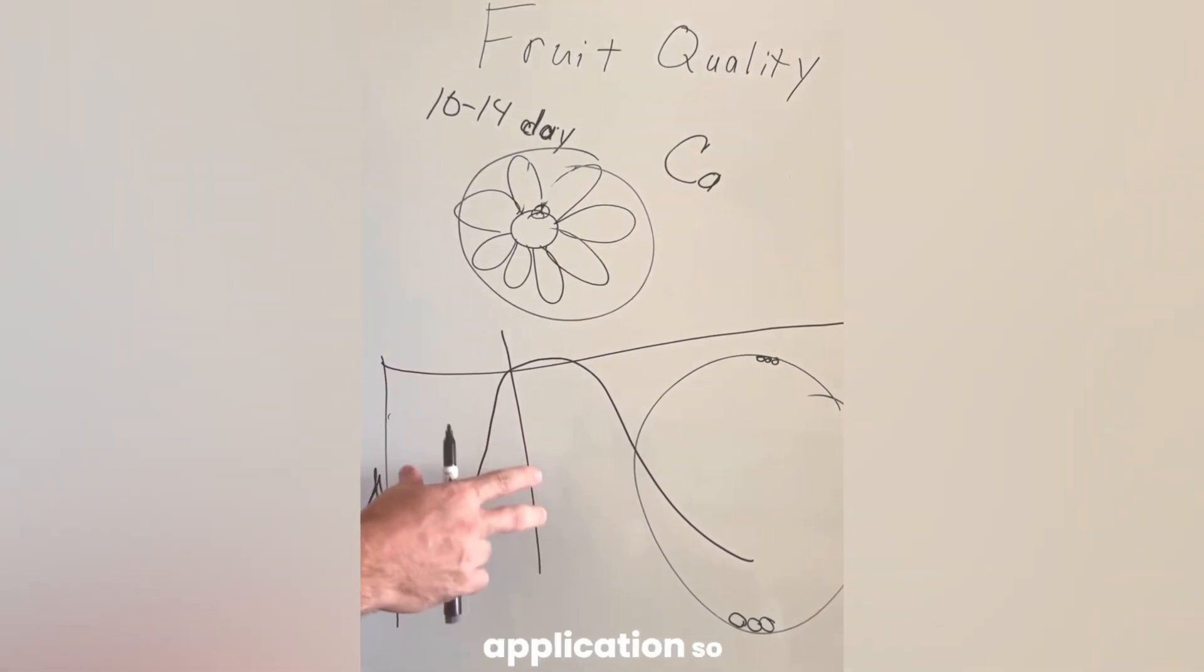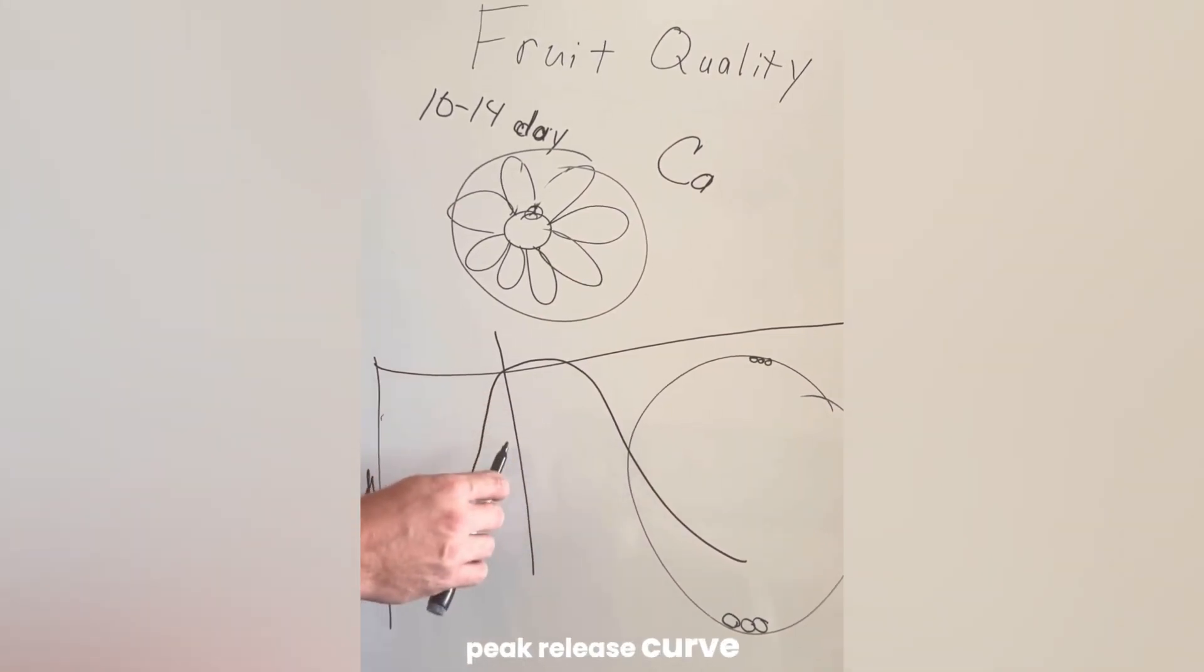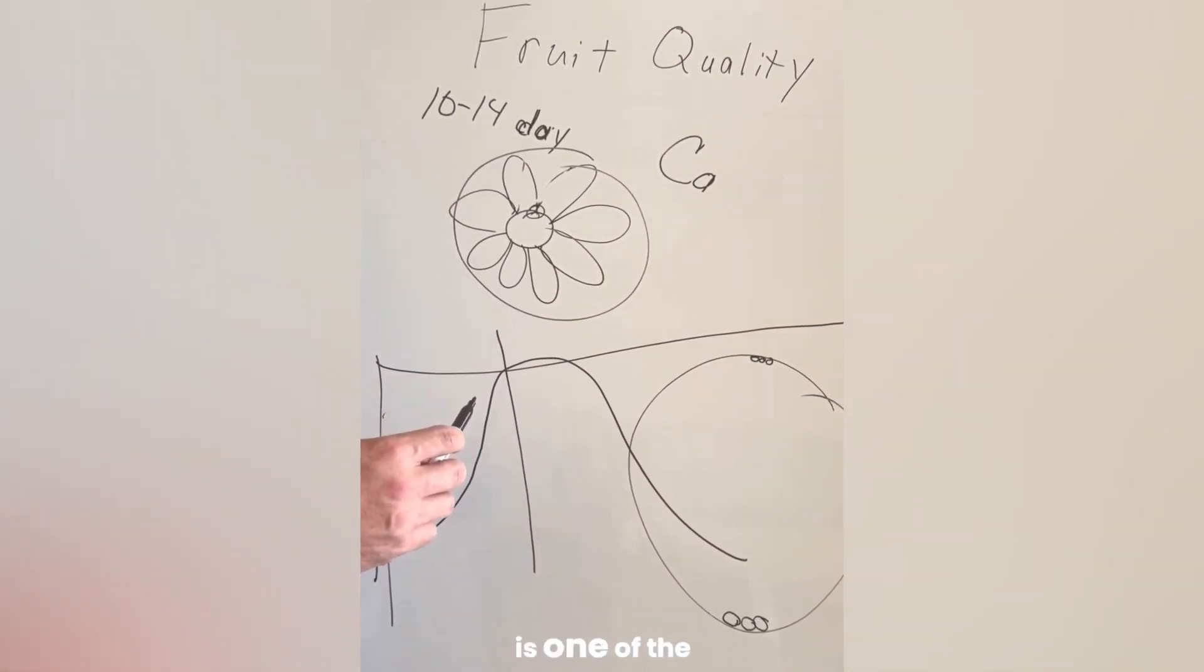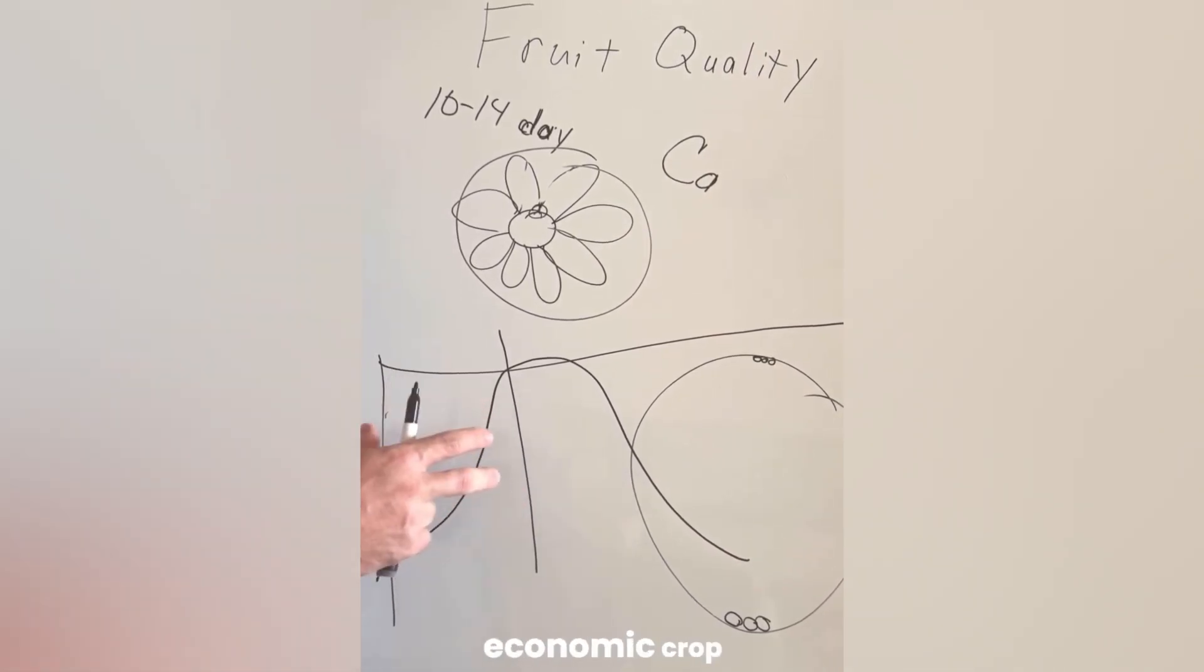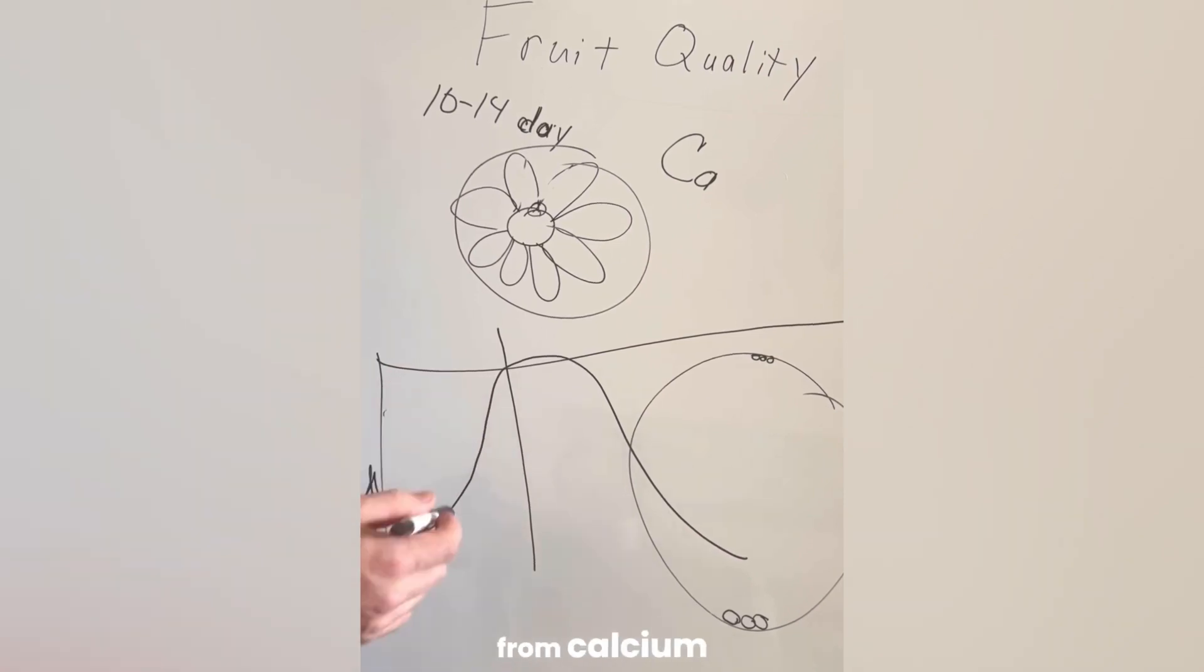Timing calcium applications so that we have a peak release curve right at the moment of the cell division window is one of the easiest ways to get a significant economic crop response from calcium supply.